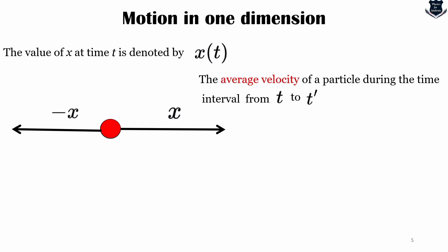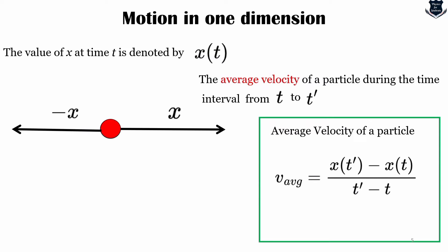The average velocity of a particle during the time interval from t to t prime is defined as the change in position divided by change in time.